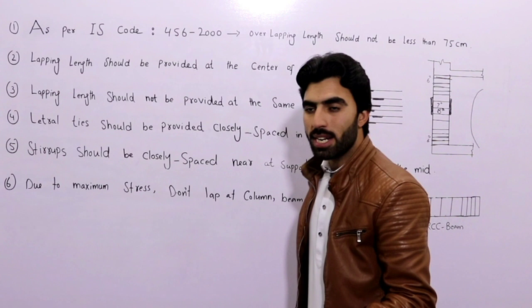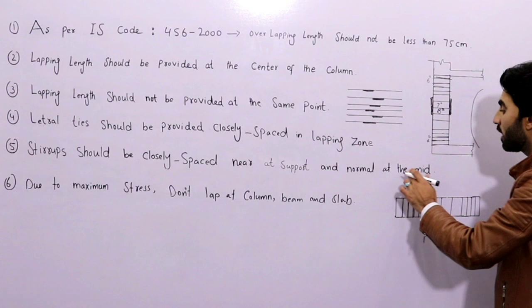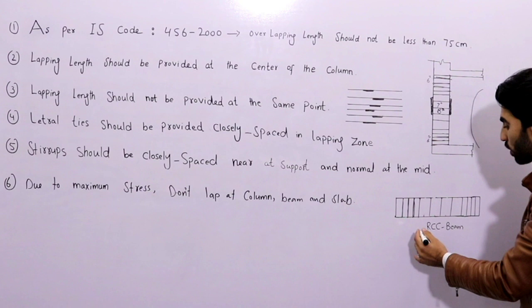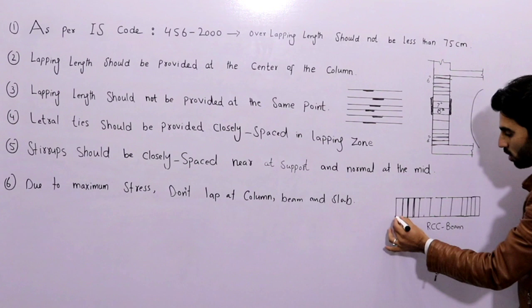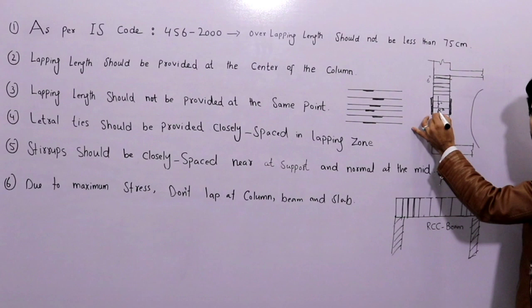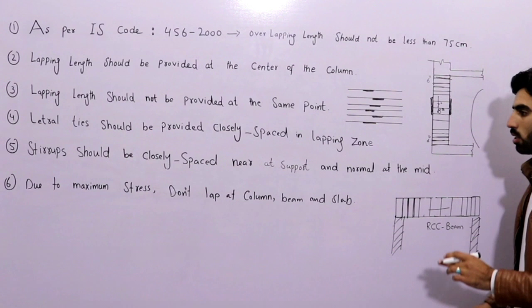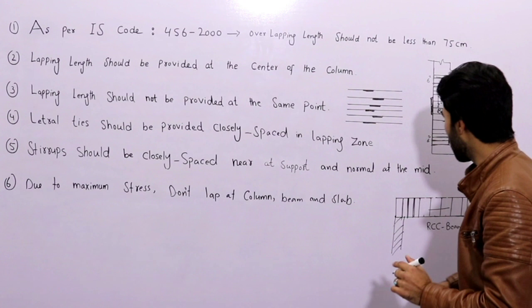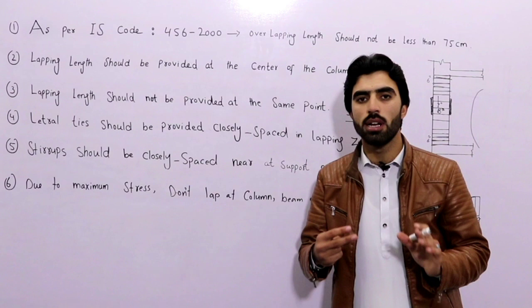The fifth point is about stirrups. Stirrups should be closely spaced near the support and normal at the mid. As you can see in the diagram for an RCC beam, the stirrups are close near the support — which is the column — and normal at the mid. This applies to both beam and column. Stirrups are closely spaced at supports because there are more stresses there.